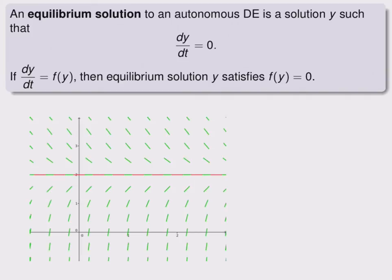Remember, y is a function, and so what we're saying is that we have a function y whose slopes are always 0. That means that y is a constant function, and its graph, as shown here, will always be horizontal.